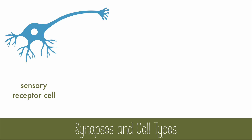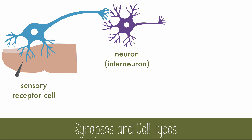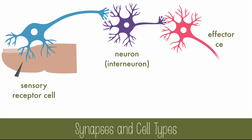A sensory cell could be part of the eye, ear, nose, skin, or any place where senses are used. This sensory cell is connected to the skin and will pick up pain sensations. The pain message may be sent to another neuron that could be part of the spinal cord or brain. These intermediate neurons are also called interneurons. The message can then be sent to a cell that will have an effect on another cell, so they're called effector cells.